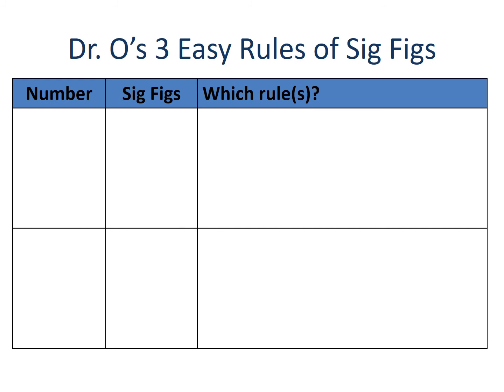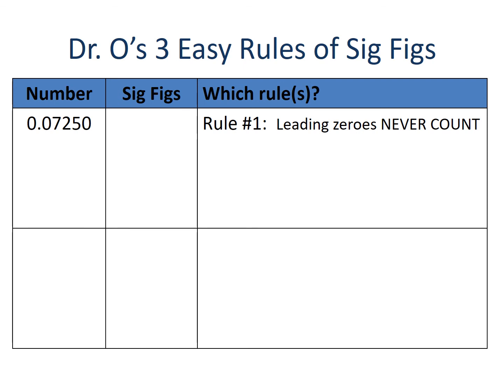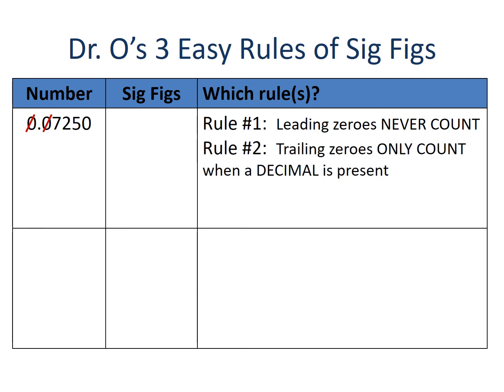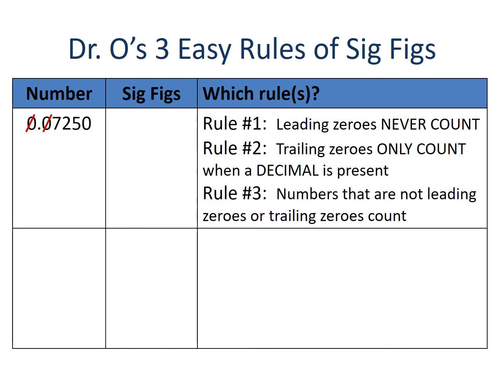Let's work two more examples. Here we have 0.07250. This number rings all the bells — leading zeros, trailing zeros, and a decimal. Rule number one: those first two zeros go away. Rule number two: we have a trailing zero and a decimal is present, so our trailing zero becomes important. Rule number three applies to our non-zero numbers as well. Our important digits are the seven, the two, the five, and yes, that trailing zero — four significant figures.